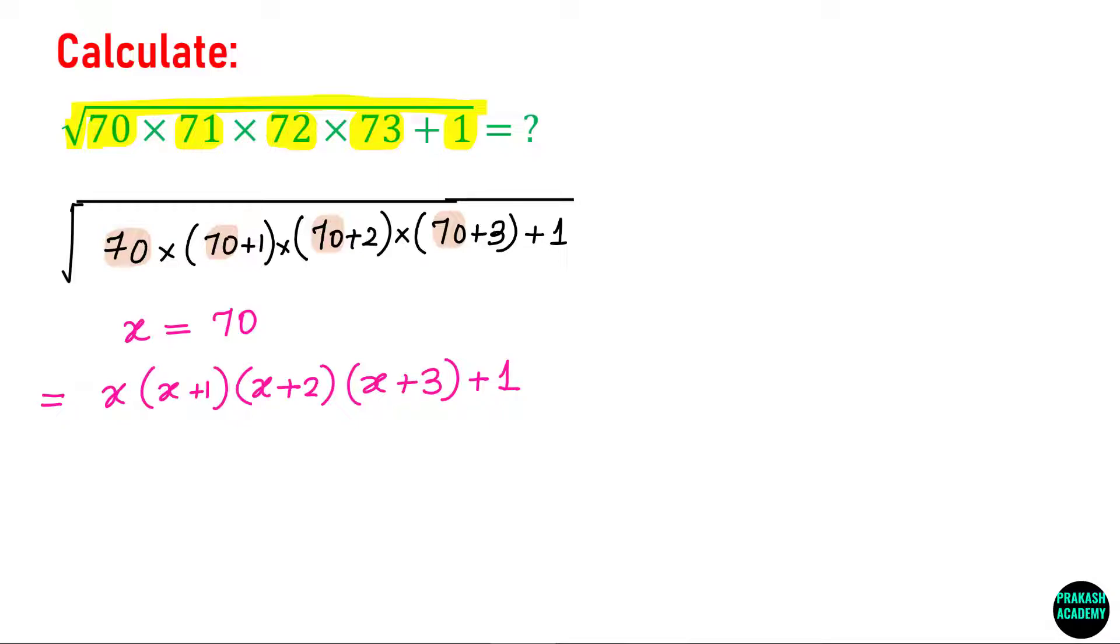Now let us try to simplify this. You see here you have 2 and here you have 1. What I can do is club these two terms together then I will have 3x, and if I club these two terms together once again I will have 3x. I will have x into x plus 3 multiplied by x plus 1 times x plus 2 plus 1.